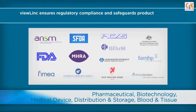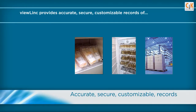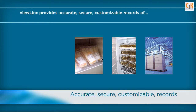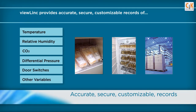ViewLink continuous monitoring reduces the risks of non-compliance while safeguarding valuable product against loss or adulteration. ViewLink provides accurate, secure and customizable records of your controlled parameters, including temperature, humidity, CO2 and more.